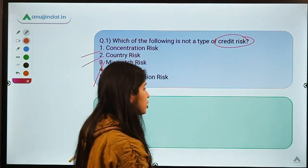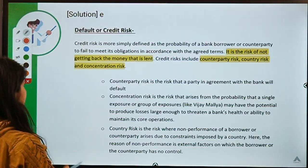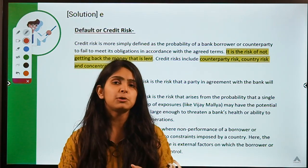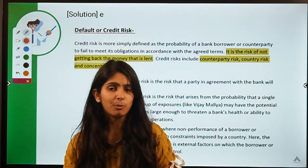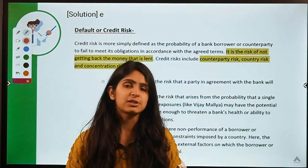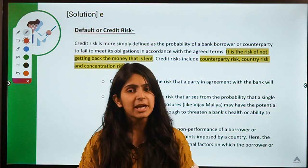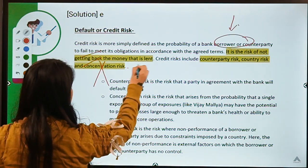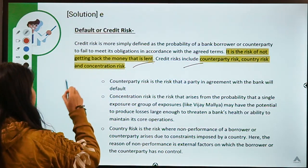To understand this question, we need to understand what credit risk means. Credit risk refers to a situation where you have lent money to some party and that party is not able to give your money back. For example, if your friend forgets their wallet and you pay for them but they never pay you back — that money is lost, and the risk you faced in lending is known as credit risk. Credit risk includes three subclassifications: counterparty risk, country risk, and concentration risk.